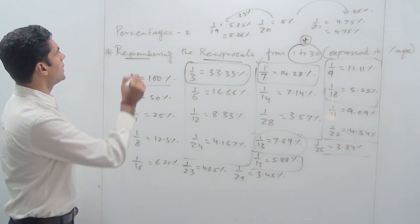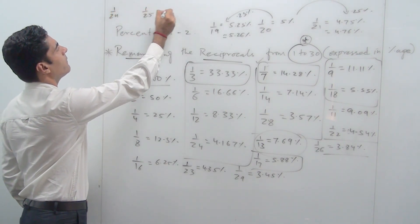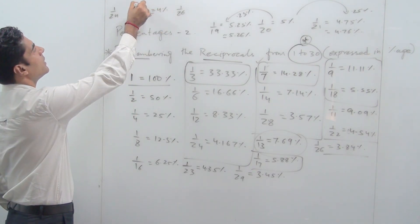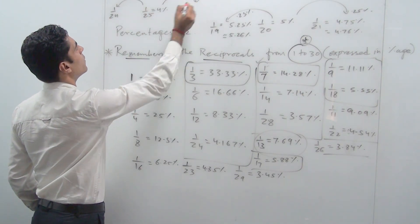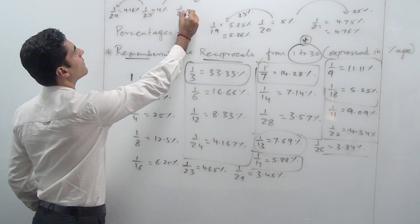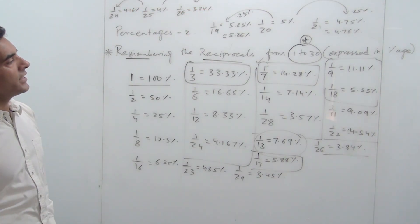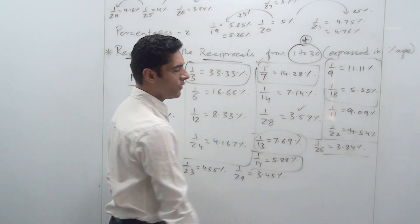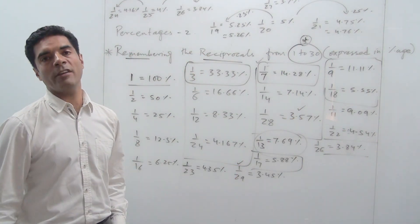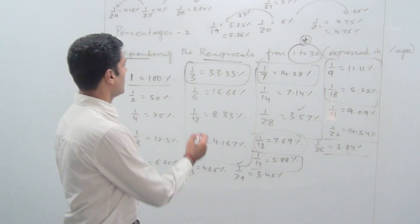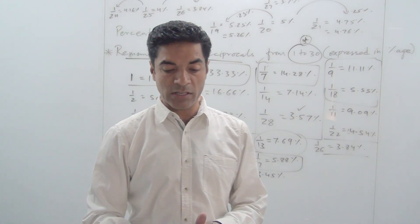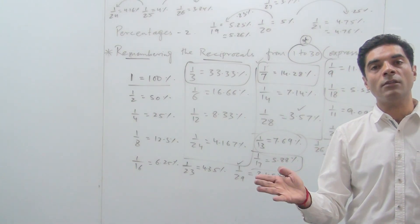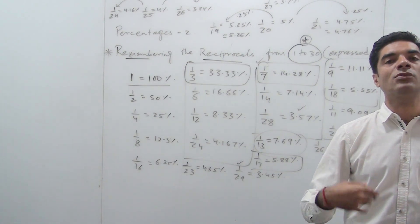Now for 1/24, 1/25 and 1/26: 1/25 is 100/25 which equals 4%. So 1/24 will be 0.16 more than 4%, giving 4.16%, and 1/26 will be 0.16 less, giving 3.84%. The only number left is 1/27, which is 3.7%. 1/28 is 3.57%. 1/29 we have already done as 3.45%. And 1/30 is one-tenth of 1/3, which equals 3.33%. I would like you to invest some time in remembering these reciprocals of numbers from 1 to 30 expressed in percentages and start applying them while solving quantitative aptitude questions. Thank you.